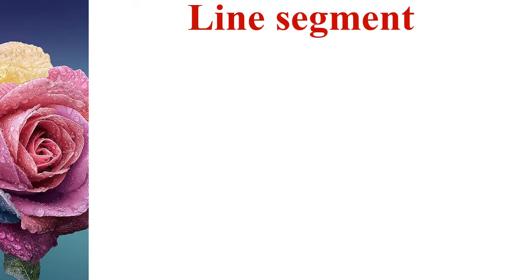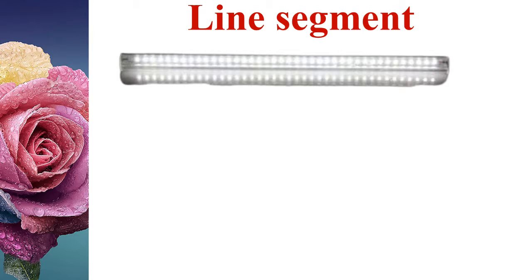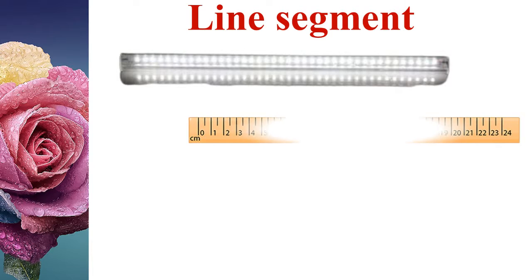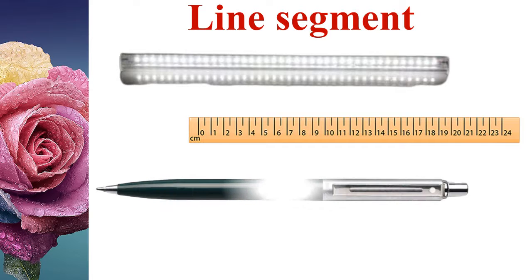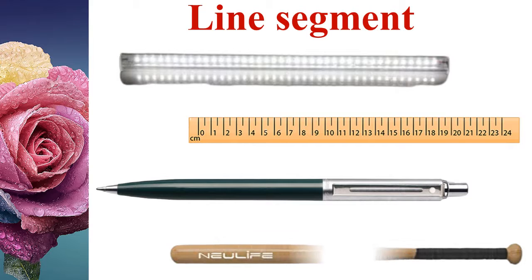A few examples of line segments are a tube light, an inch tape, a pen, and a baseball bat.